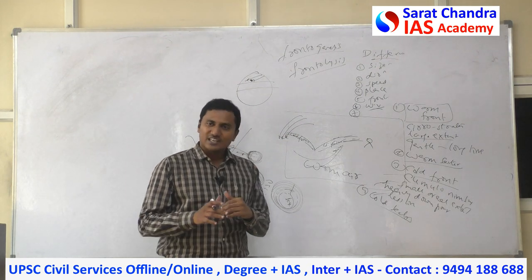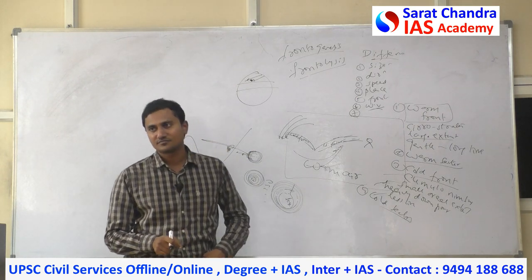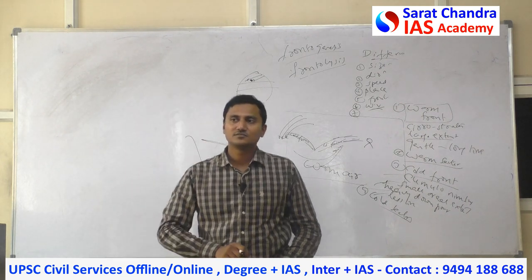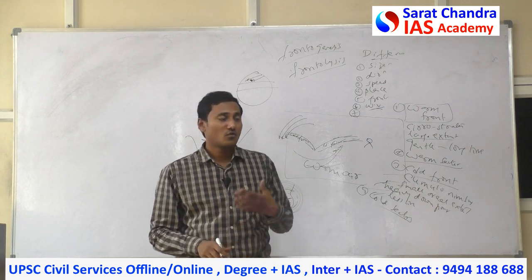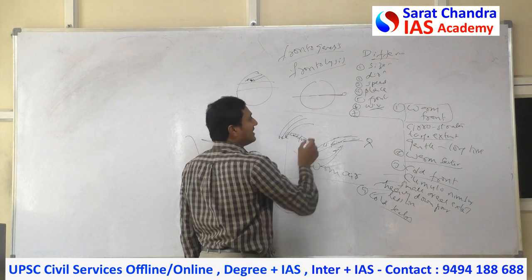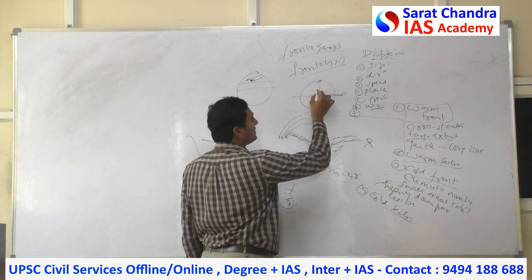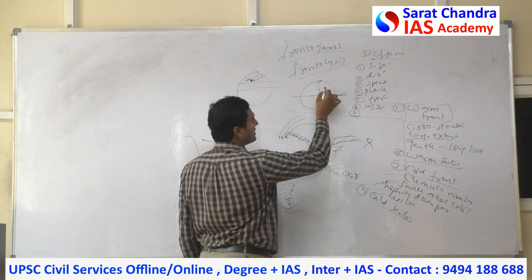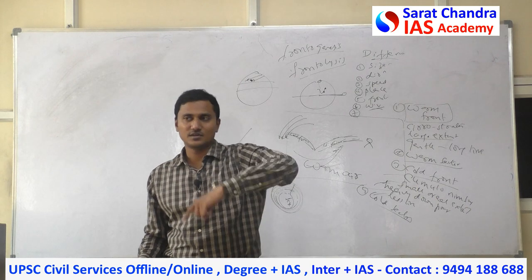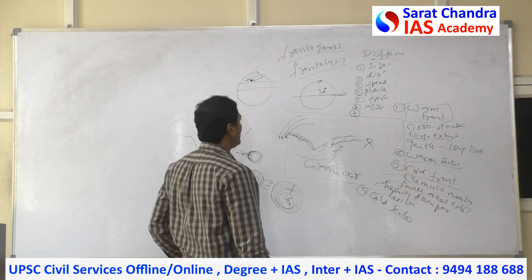Cyclones never occur on the equator because the most important factor is Coriolis force. At the equator, Coriolis force is zero, so no cyclone. Orissa cyclones are generally stronger than Chennai cyclones because Orissa is at a higher latitude, where Coriolis force is greater. Coriolis force = 2Ω × mass × speed × sin(latitude). Sin zero is zero at the equator; sin 90° is maximum at the poles. As latitude increases, Coriolis force increases.